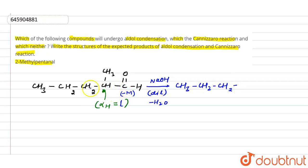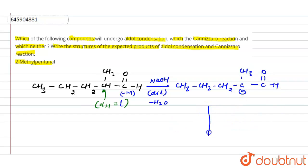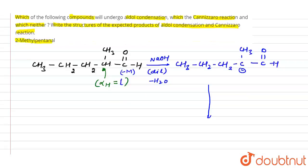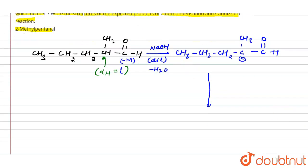The conjugate base structure of 2-methyl pentanal has a carbanion at the alpha carbon: the chain is one, two, three, four, five carbons, with CH3 at the second carbon and a C=O group, giving us a C− that acts as the nucleophile. We then take another mole of the same compound for the aldol condensation.